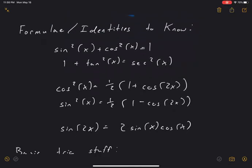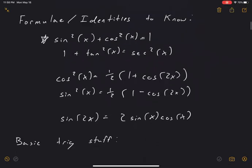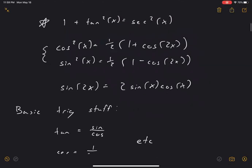Okay, so formulas we need to know for this section: the very standard one, sine squared plus cosine squared equals one. Hopefully all you guys know that. Maybe lesser known but still necessary is one plus tangent squared equals secant squared. And then we have these — I think they're double angle identities — we need to know that cosine squared equals one half times one plus cosine 2x, and sine squared equals one half times one minus cosine 2x.